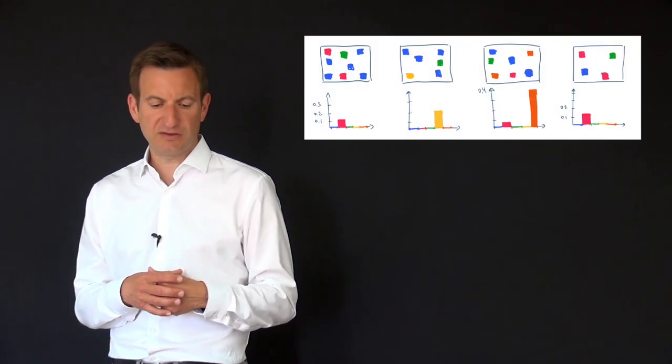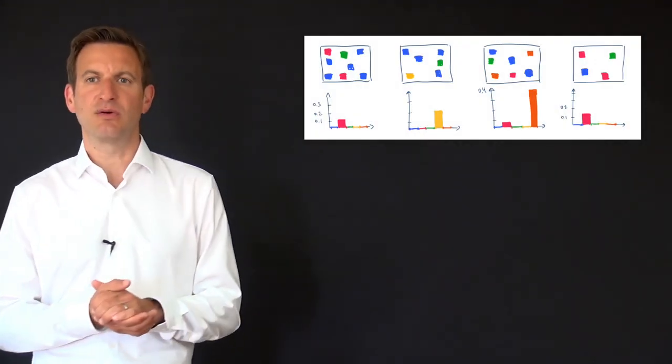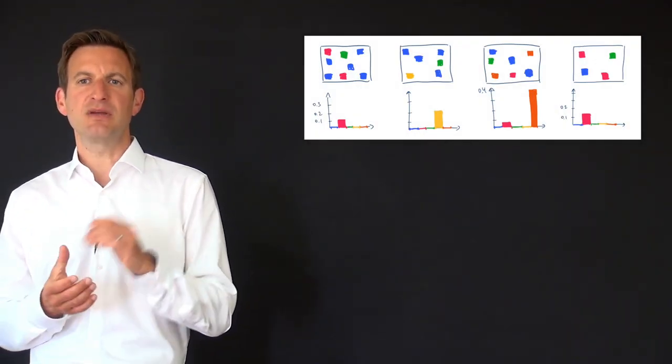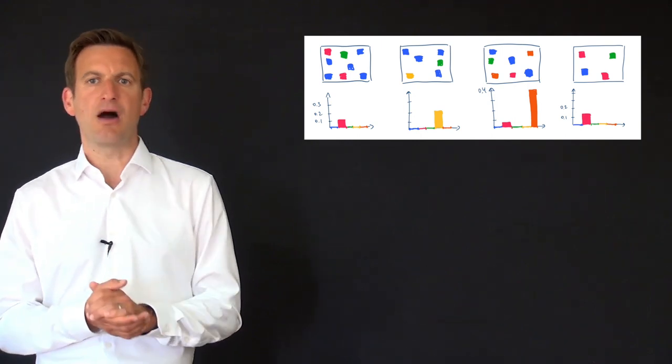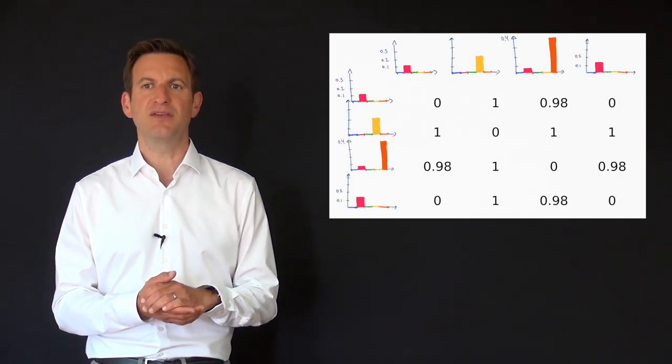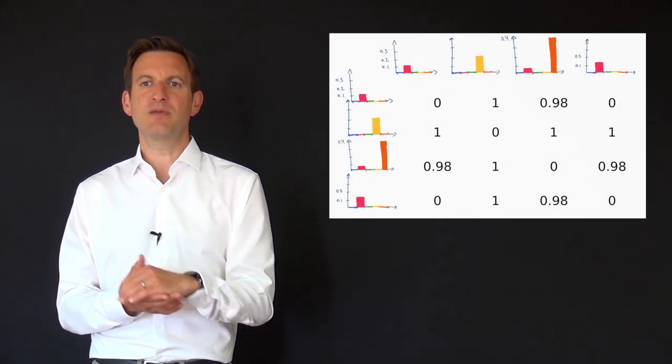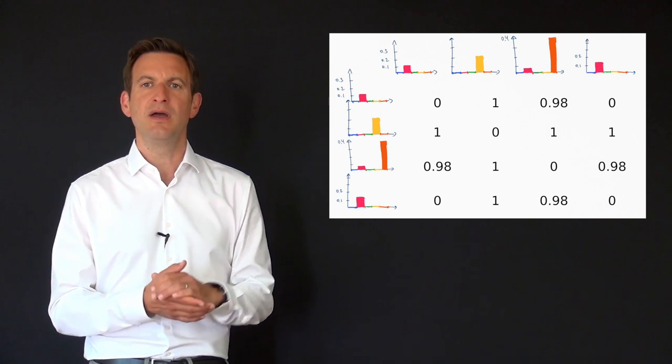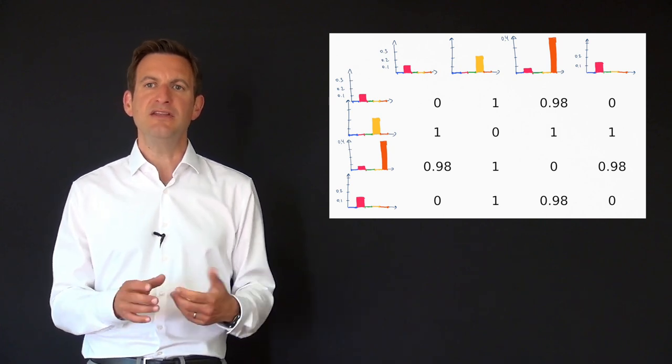So let's consider a small example with four images shown over here. In this example image number zero and image number three are similar to each other. By looking into the cost matrix of the histograms we can see that each histogram compared with itself has a distance of zero and all other comparisons lead to higher values.